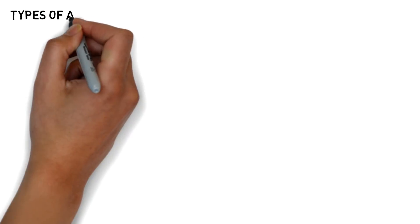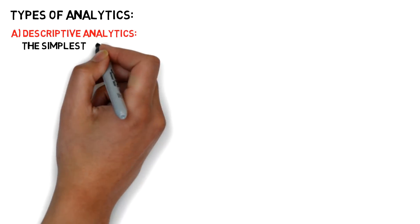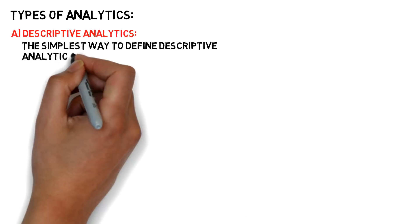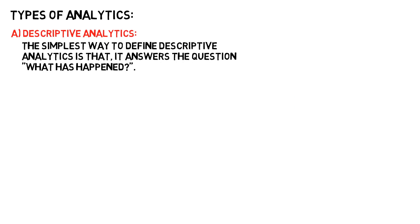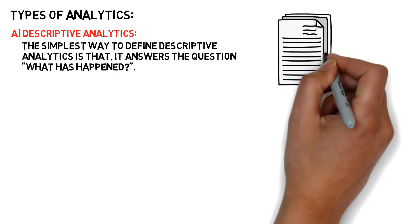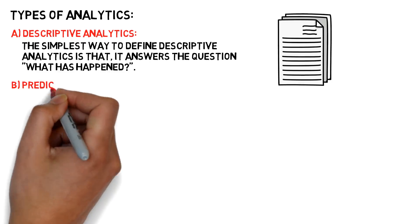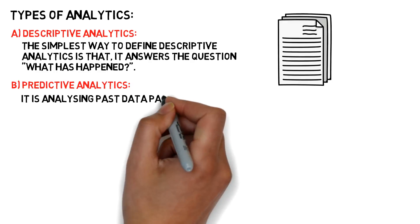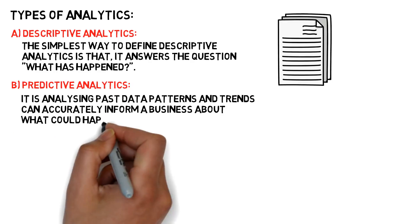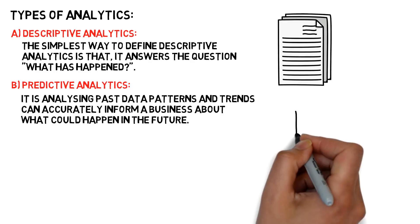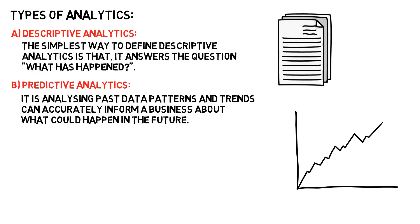Moving on, the types of analytics are as follows. Firstly, descriptive analytics. 90% of organizations today use descriptive analytics, which is the most basic form of analytics. The simplest way to define descriptive analytics is that it answers the question: what has happened? Secondly, predictive analytics — it involves analyzing past data patterns and trends that can accurately inform a business about what could happen in the future.